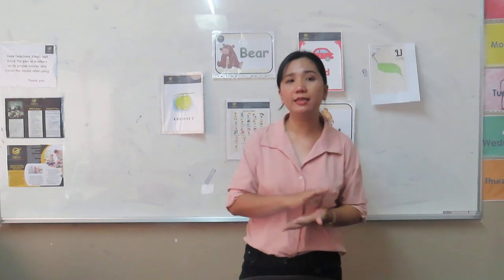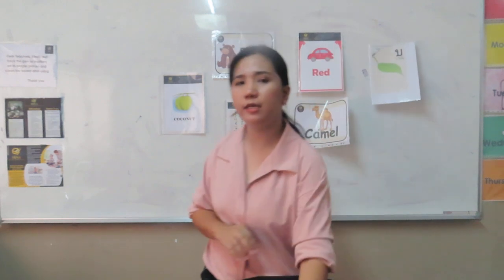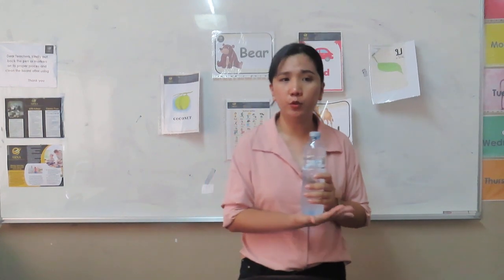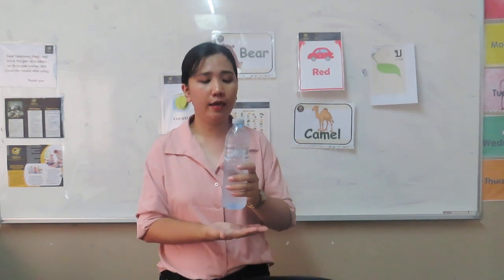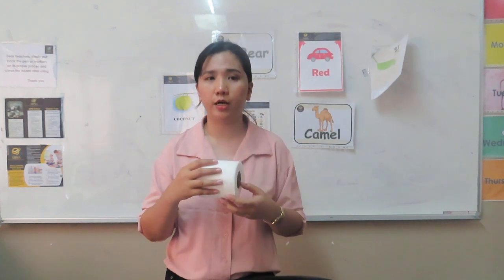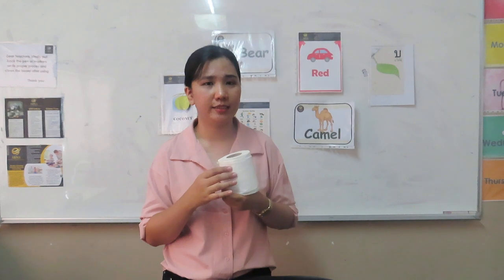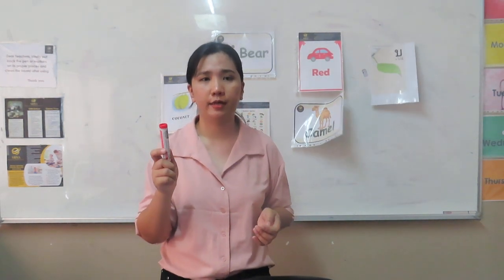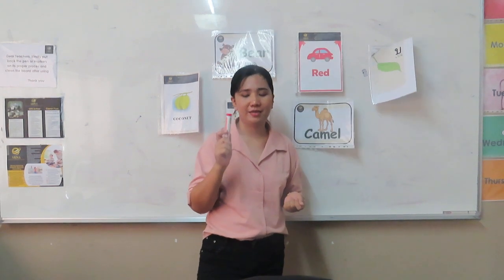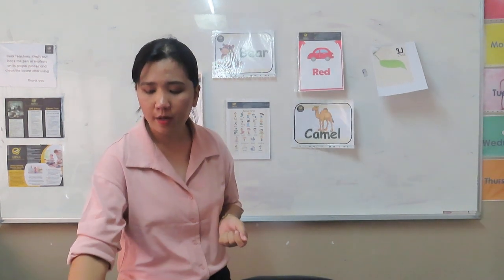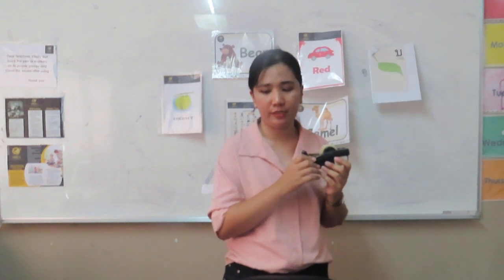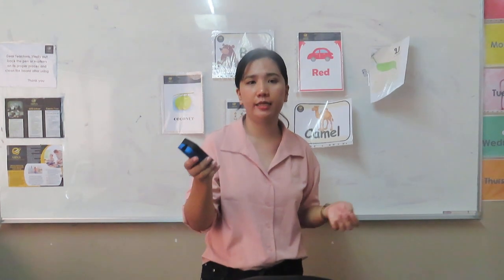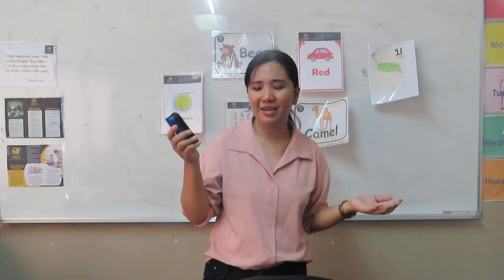Abiotic factors are the non-living things. For example, water is a non-living thing. It cannot reproduce, it cannot move by itself, and it cannot breathe. How about this roll of tissue paper? It is non-living. How about this marker? It is non-living. How about the tape dispenser? Non-living. How about the eraser? They are non-living.